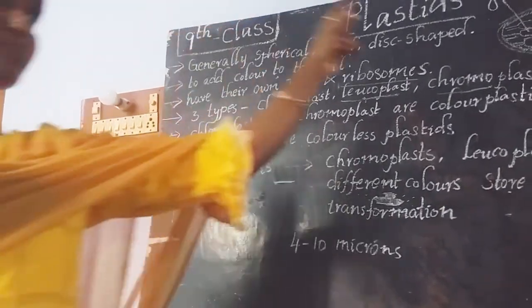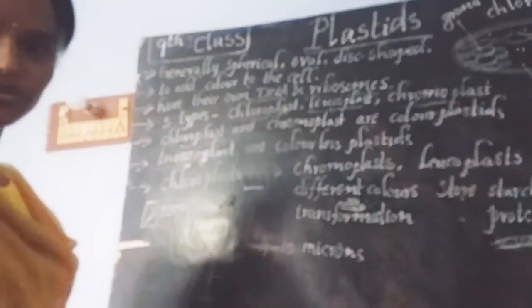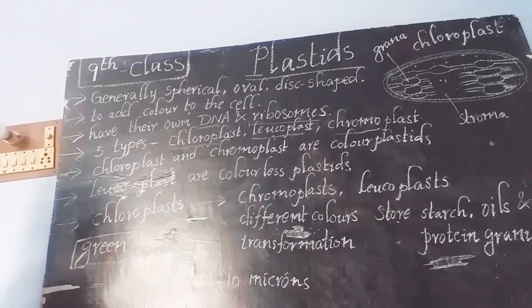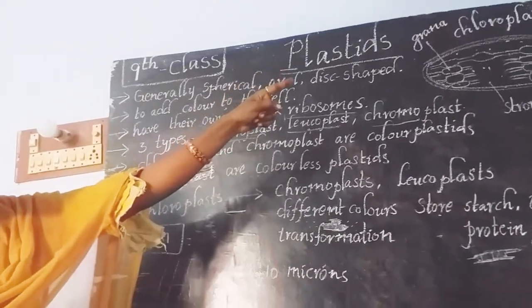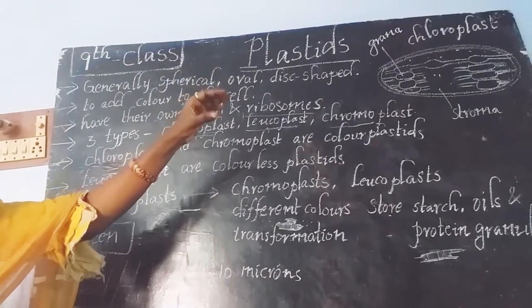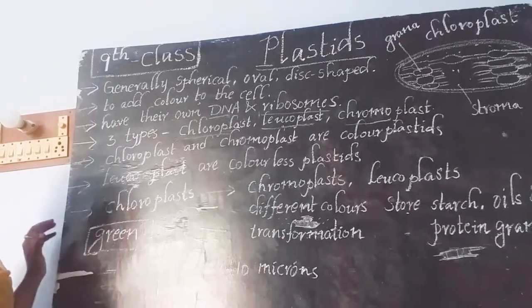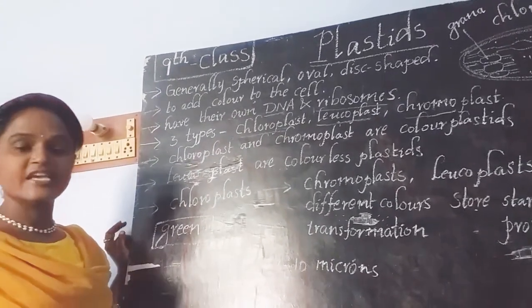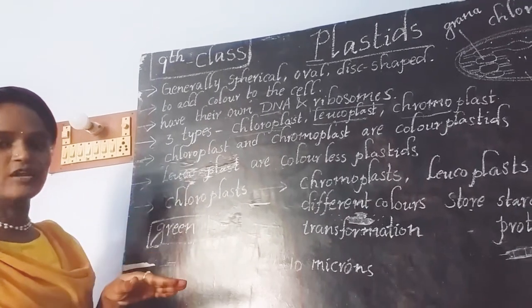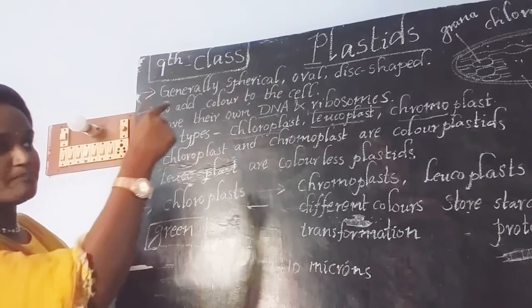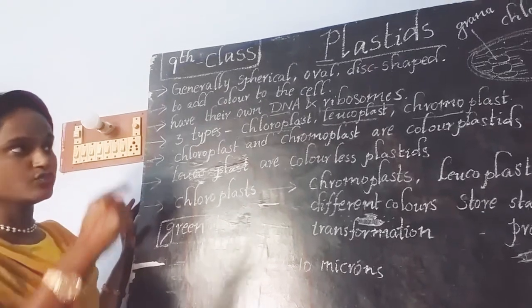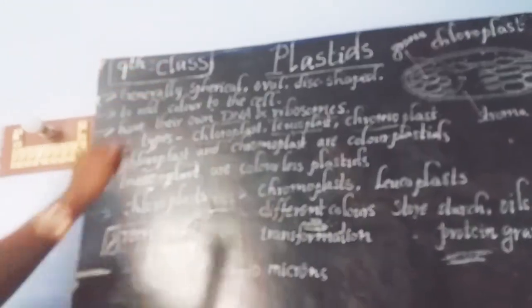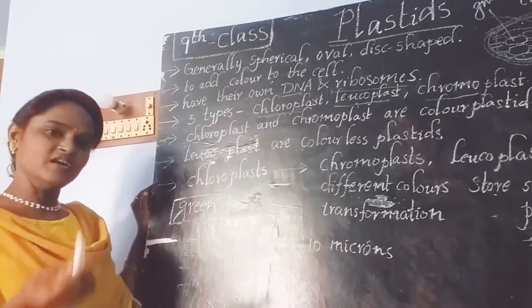If you observe this picture, it indicates the structure of chloroplast. The inner space of the organelle is filled with a fluid called stroma. Stack-like disc shapes are arranged piled up in a bunch, and that is called grana. Each sack-like structure is called a thylakoid, and those thylakoids are arranged one on another — the full structure is called grana. We will discuss chloroplast in more detail in your tenth class.